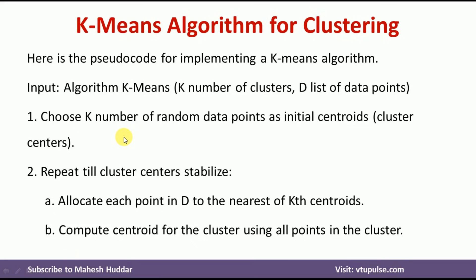In the first step, we need to choose K number of random data points as the initial centroids, where K is the number of clusters.